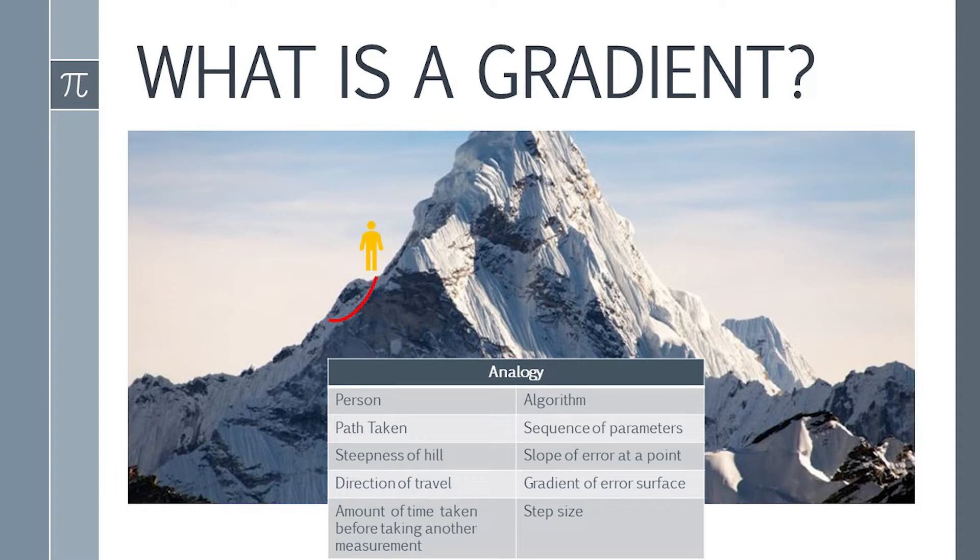A person is stuck on a mountain and is trying to get down. There is heavy fog such that the visibility is extremely low. Therefore, the path down the mountain is not visible, so they must use local information to find the minimum.